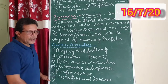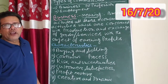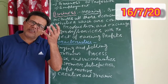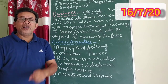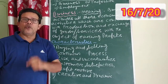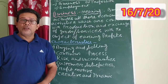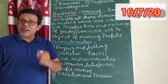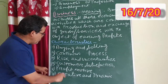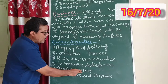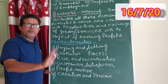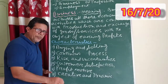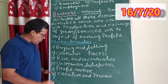Next is profit motive. The main objective or characteristic of business is to earn profit. Whatever the business might be, the main motive is to earn profit.